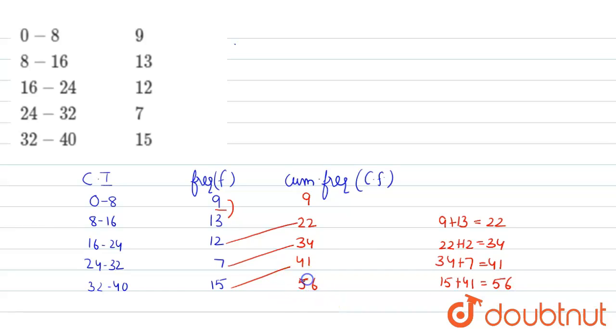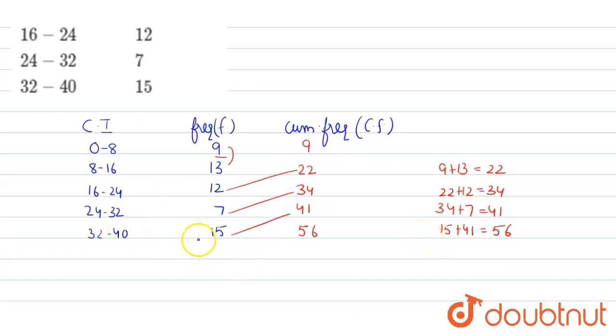Now if we want to check if our cumulative frequencies are correct or not, what we need to do here is just get the sum of frequencies given here. It will become 56. Then sum of frequencies and last cumulative frequency should be equal.